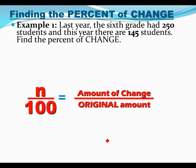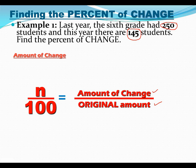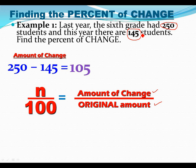Let's get into our first example. Last year the 6th grade had 250 students, and this year there are 145 students — find the percent of change. The things we need to be concerned about are: what is the amount of change and what was the original amount? The amount of change means how much did the population change. Last year 6th grade had 250 students; this year there are 145. So you're going to figure out how much it changed by finding the difference of 250 and 145. Subtract those numbers and you get 105. That's not 105% — it's just a raw number, not the percent yet. We have to solve that proportion to figure out what the percent is.